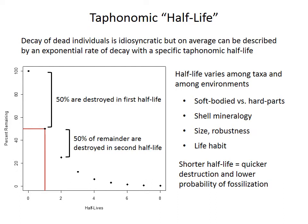The destruction of any particular shell is very unpredictable — it might be destroyed in days or weeks, or it may survive indefinitely and become a fossil. However, we can use an analogy with radioactive decay and describe the decay of a large group of individuals with a half-life. A half-life means that from a big group of shells, 50% of them will be destroyed by taphonomic processes in the first half-life, and then in the second half-life, 50% of the remaining shells will be destroyed, and so forth.